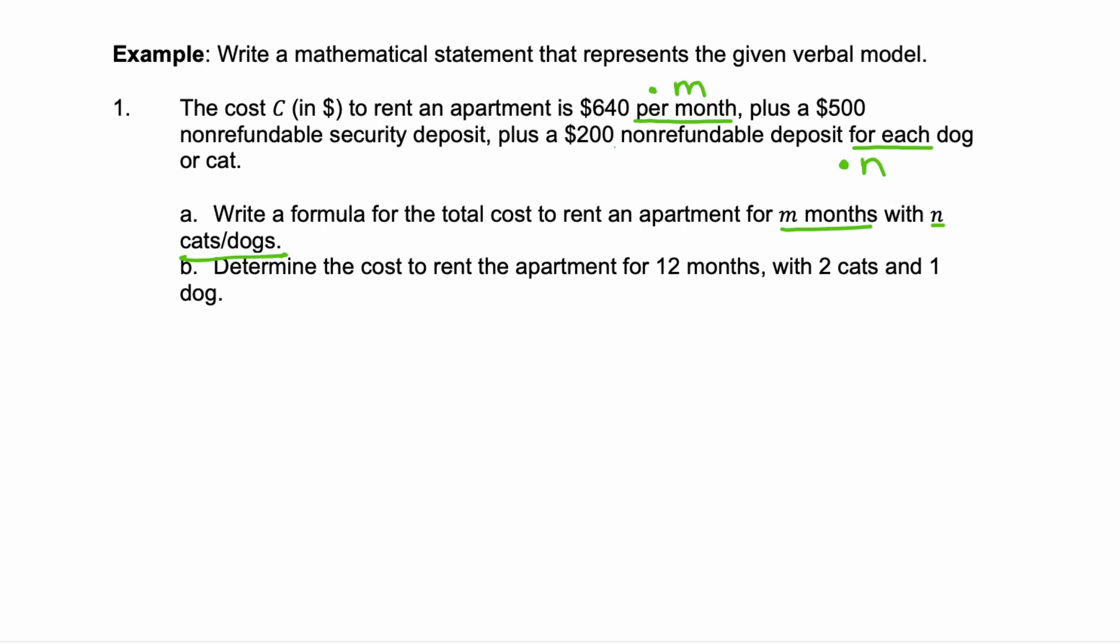Now, we can slowly translate this into a mathematical statement. So, our cost C is, remember that's equals, $640 per month. So, $640 times M plus $500 plus this $200 per cat and dog.